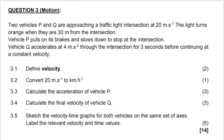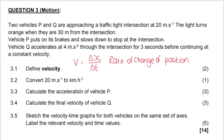Our first question is to define velocity. Remember the formula for velocity is the change in position divided by the change in time. So how we say that in words is: velocity is the rate of change in position. Every time you see 'rate,' know that rate means dividing by time — it's the change in position per unit of time.